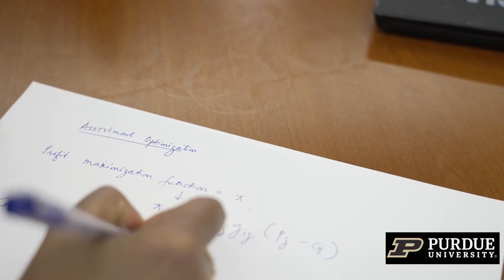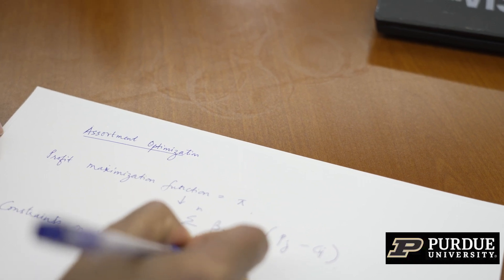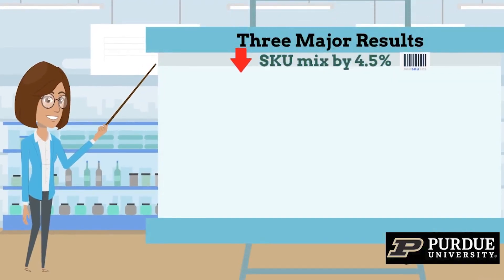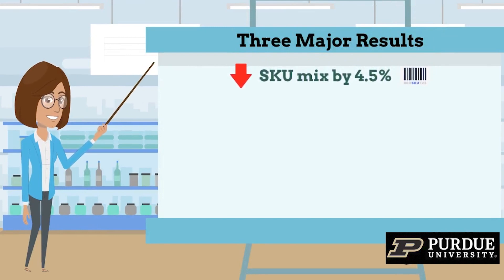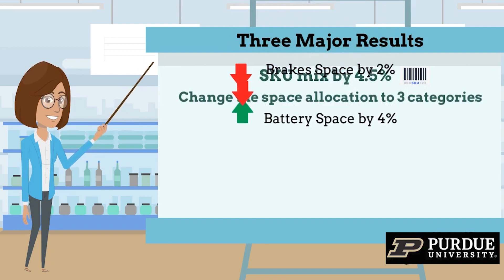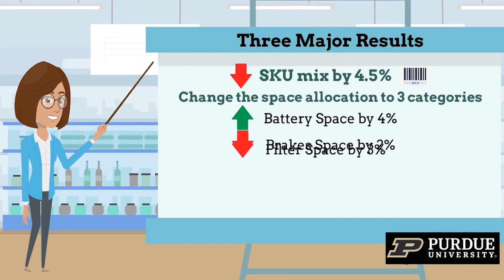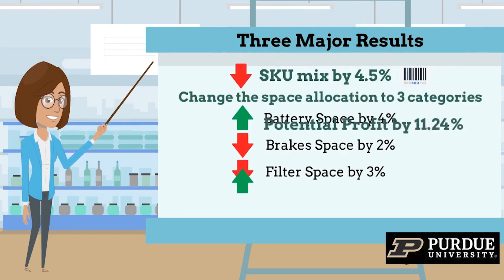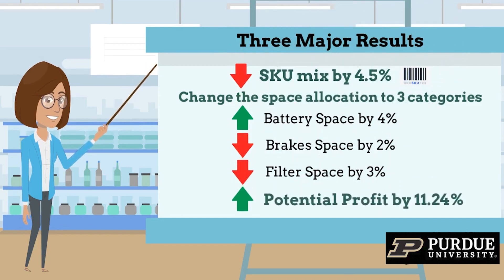We created a stratified sample by choosing the top and bottom performing stores from each of the seven regions among the 5,000 stores. After choosing the data and writing the code in Python, we found three results: first, reducing the SKU mix by 4.5%; second, changing the space allocated to three categories — battery space to increase by 4%, brakes to decrease by 2%, and filters to decrease by 3%; and third, a potential increase in profit of 11.24% post-optimization across the sample stores.